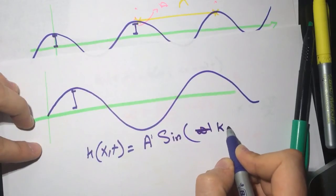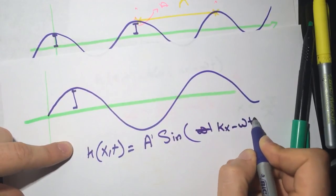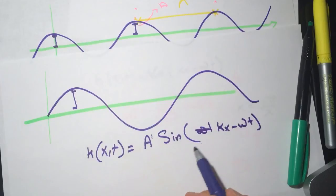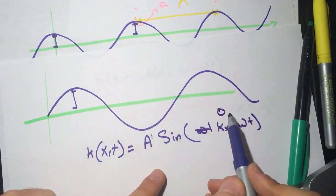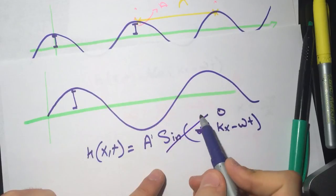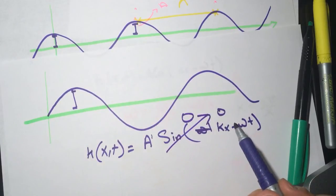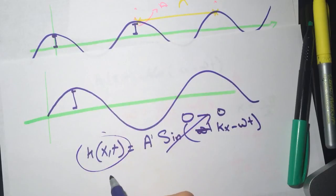The amplitude... It will be sine because... It's k x minus omega t. So now at time and x equals zero, this will be zero. The inside. Then sine of zero will give us the whole thing going to zero. So the h will be equal to zero. Cool?